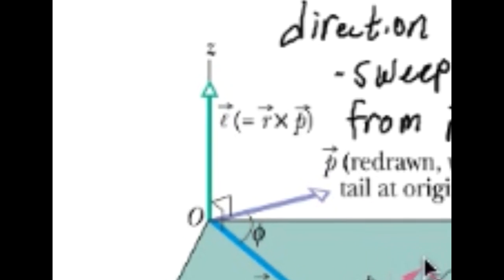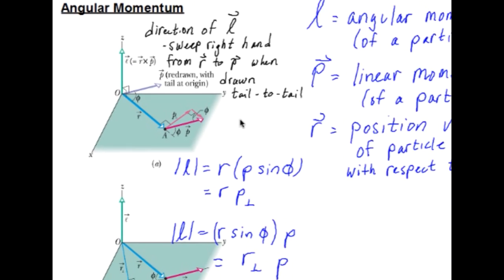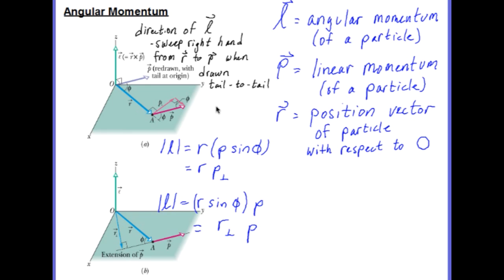And it is the cross product. Just like when we talked about torque, torque is the cross product of R and F. Angular momentum is the cross product of R and P. So that means the magnitude of the angular momentum is R P sine phi.